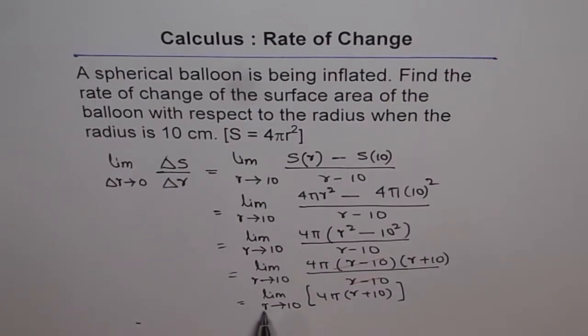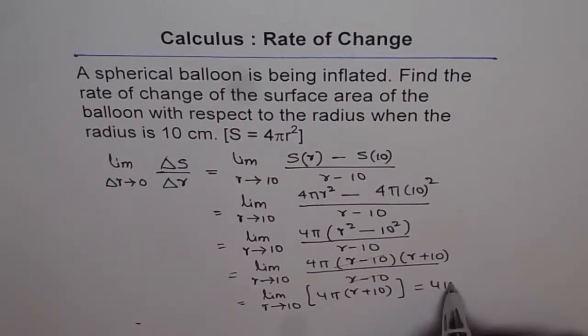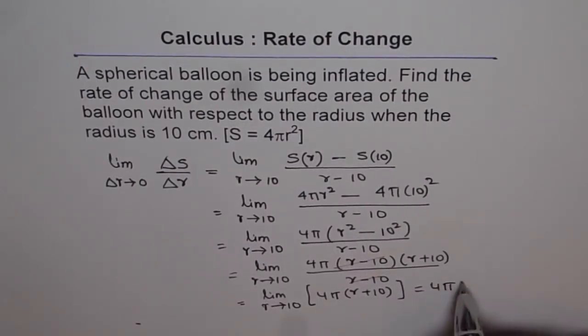Now when it is, so the value for this will be, when r is very very close to 10, we can find the value. So if I substitute r as 10 here, I get 4 pi times 10 plus 10, 20.